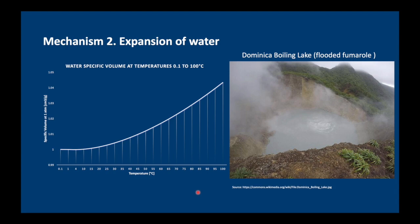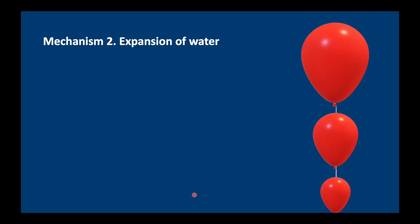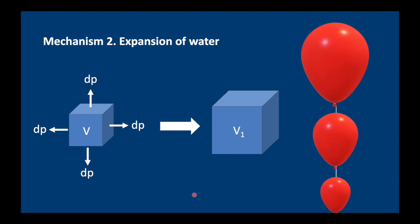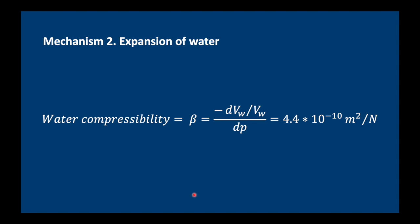We know that water expands when it gets hot. Here's a nice picture from Dominica, the boiling lake. But can water also increase like a balloon if you reduce the pressure around the outside? Here is the volume of water. We reduce the pressure and it will expand a little bit. Well, not as much as a balloon of course. In fact, the water compressibility, which is this term called beta, is tiny. It is 10 to the minus 10 meters squared per Newton. So it's more or less like solid rocks. It does not expand very much.